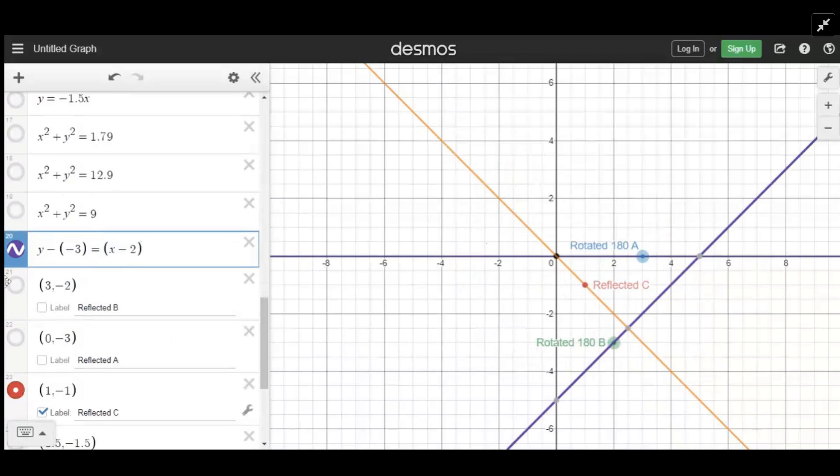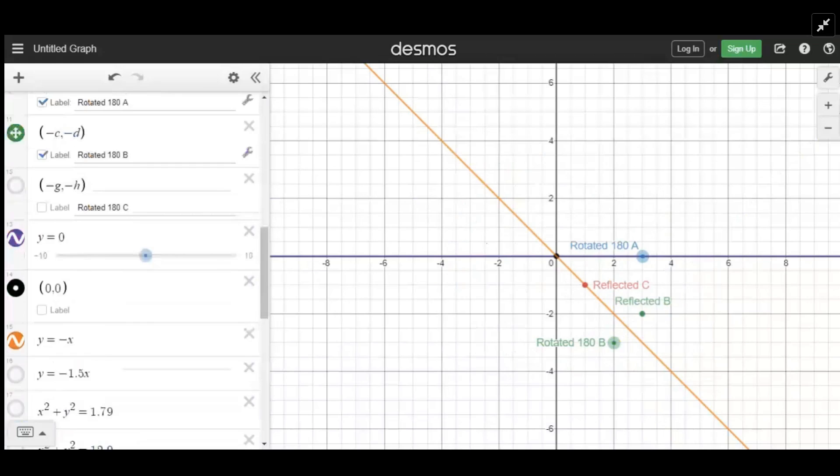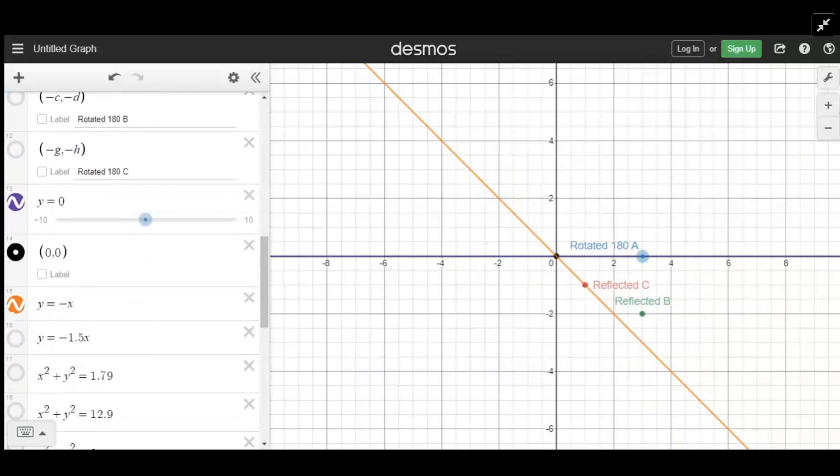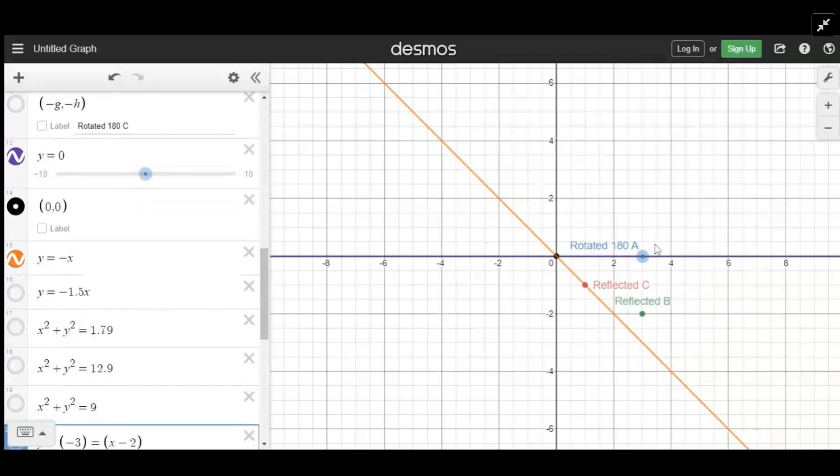So our reflected B is right there. Now we can get rid of our rotated B because it's just confusing. And now the last one we need to do, we need to reflect A. So we're going to draw a line from here to here.